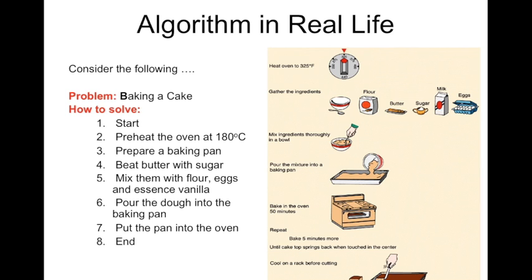How do we solve this problem of baking a cake? We solve it in a series of steps. Step number one is start. Step number two, preheat the oven at 180 degrees Celsius. Number three, prepare a baking pan. Number four, beat butter with sugar. And number five, number six, etc., until the end where we get our cake and we solve our problem.